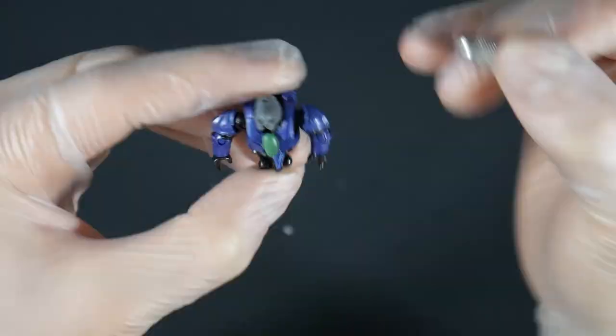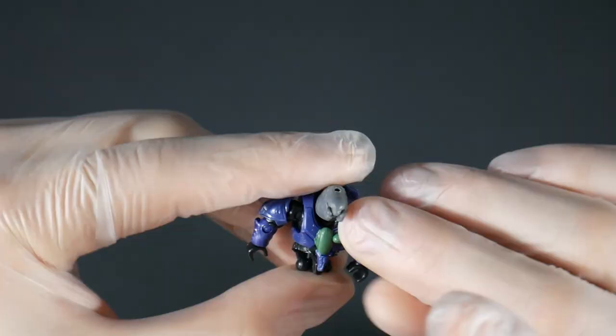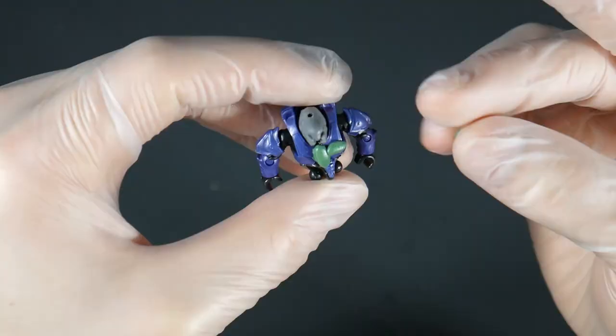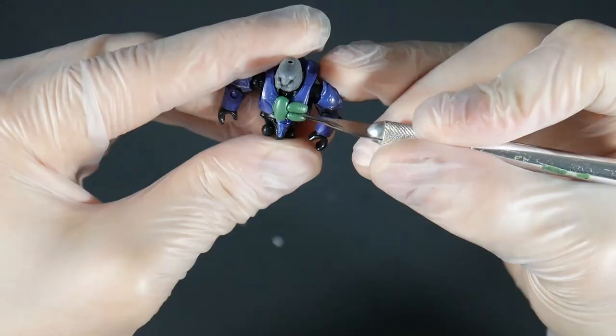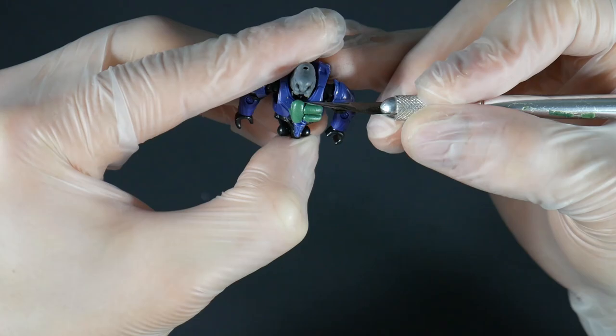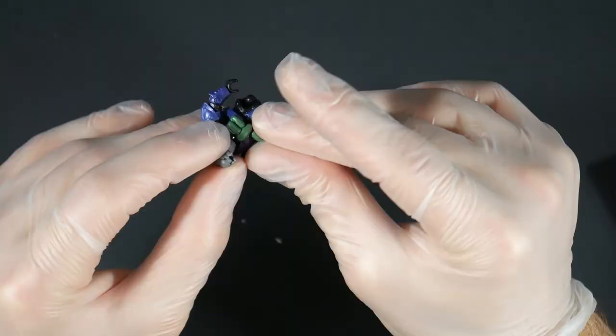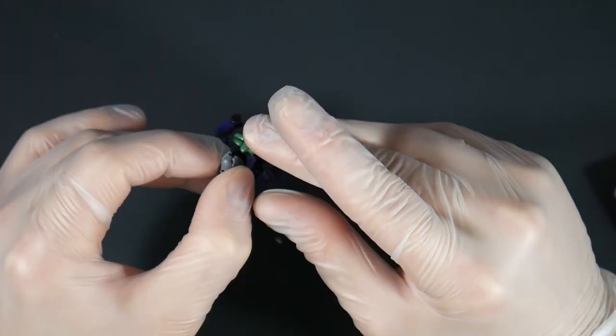Now moving on to the chest, I wanted to make kind of like a Halo Reach Zealot looking chest. So I just added a little bit of green stuff onto each side and this gave me a little bit of practice, which was nice. And I slowly sculpted it to shape.